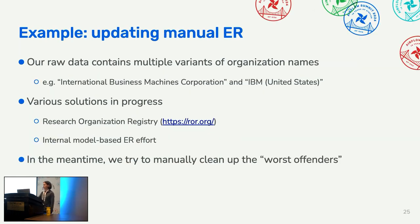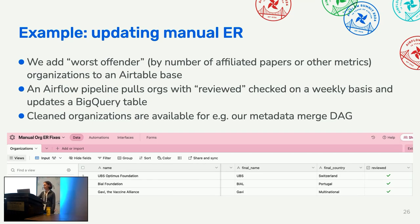An example of this is updating our manual entity resolution table. Our raw data contains variants of organization names — like 'International Business Machines Corporation' versus 'IBM United States.' While longer-term solutions like the Research Organization Registry and our own model-based entity resolution effort are in progress, we manually clean the worst offenders. On a regular basis we add worst-offender organizations to an Airtable base, humans map them to a canonical name and ID, a reviewer checks a reviewed column, and an Airflow pipeline weekly pulls those reviewed records to update a BigQuery table used by other DAGs.